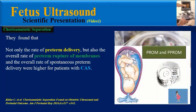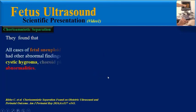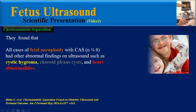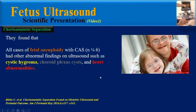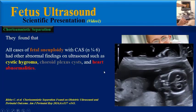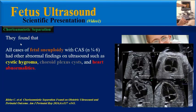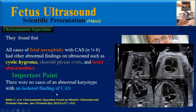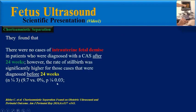All cases of fetal aneuploidy with CAS had other abnormal ultrasound findings, such as cystic hygroma, choroid plexus cysts, and heart abnormalities. Importantly, there were no cases of an abnormal karyotype with an isolated finding of CAS.